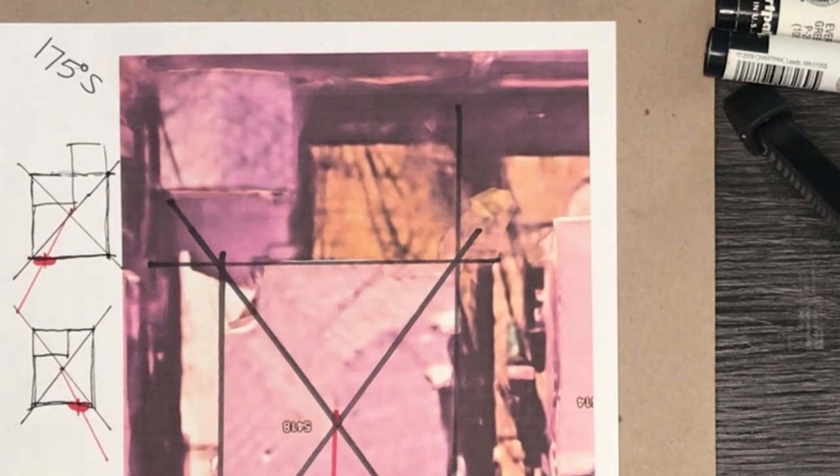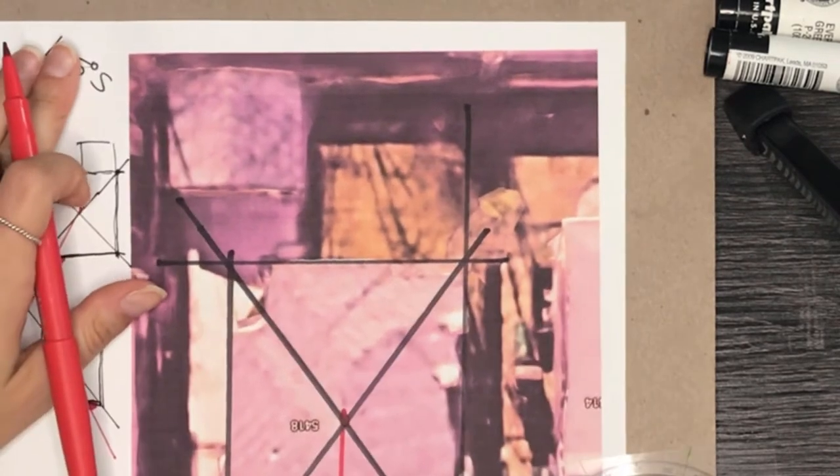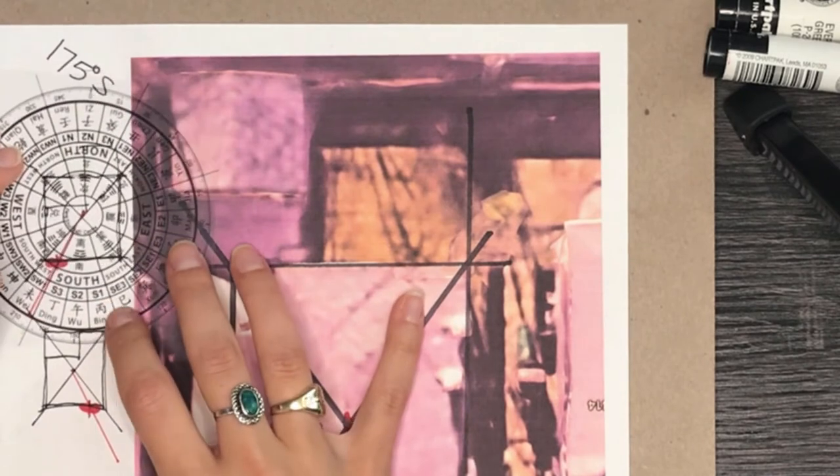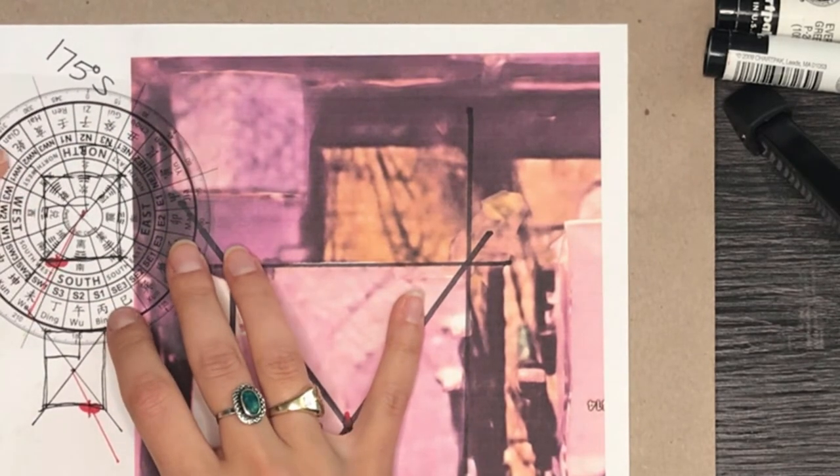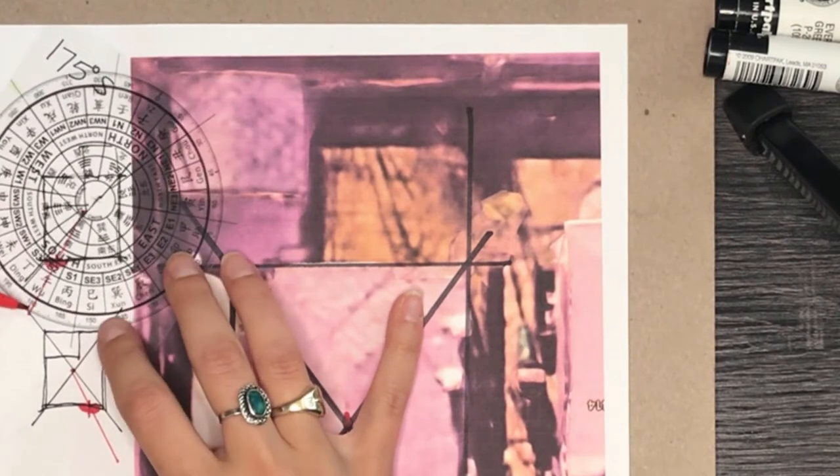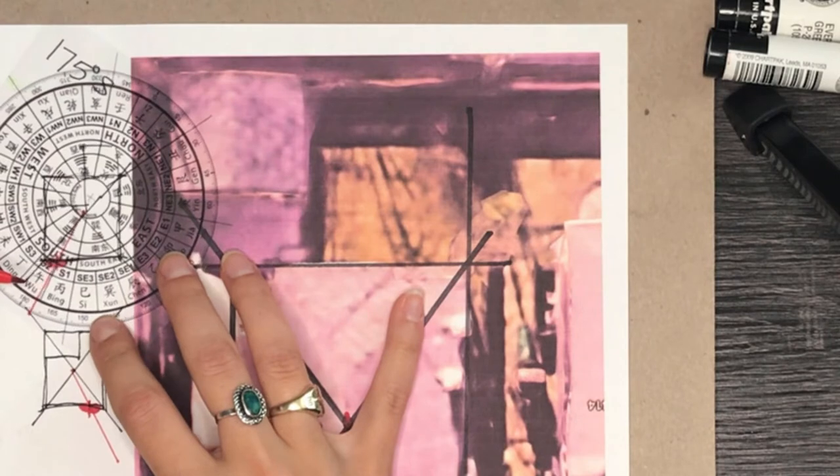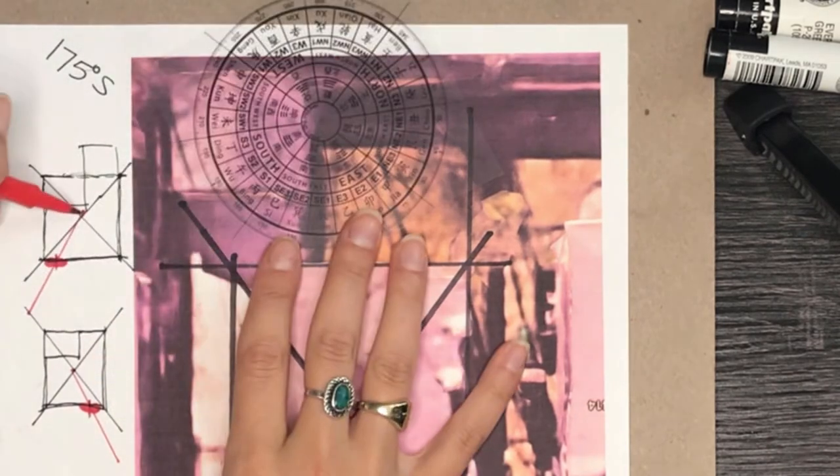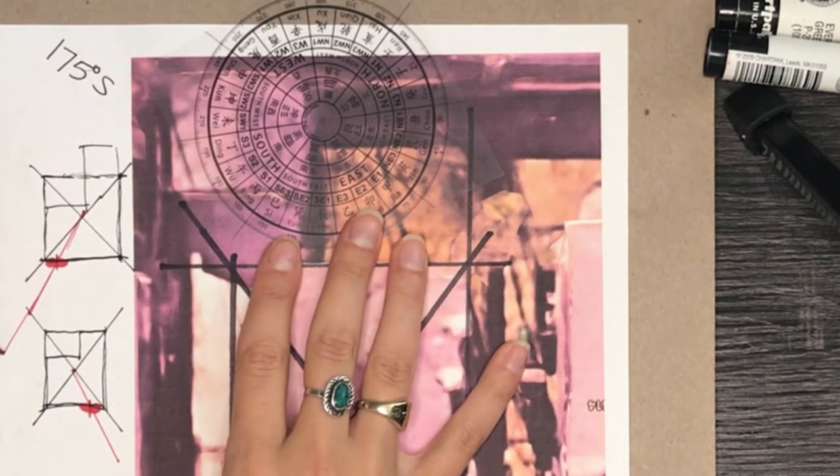Because what you're going to do now is line up 175 degrees with the center of the door, because that's where you were standing. So we can't really show you because this compass is too big, but you would take this. You'd find 175 degrees on here, which is right here. You would line the center up with 175 and the door. That's why you draw this line really long.